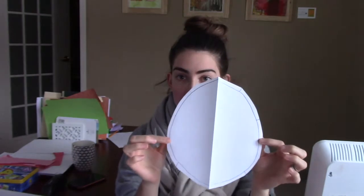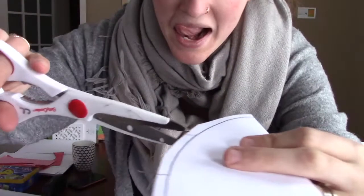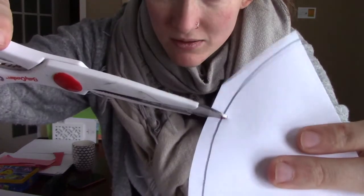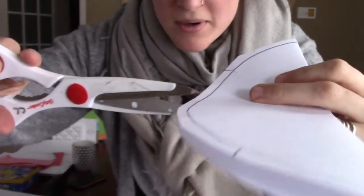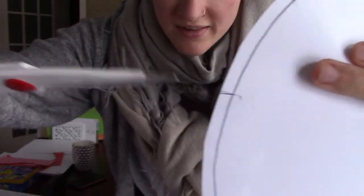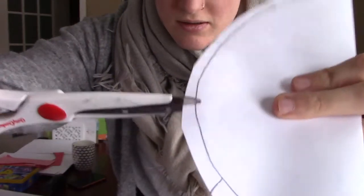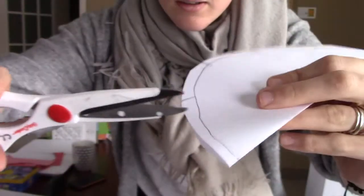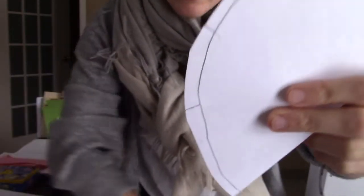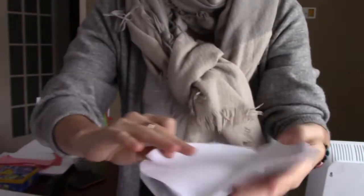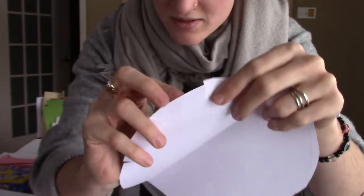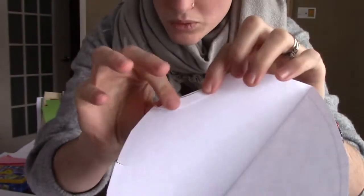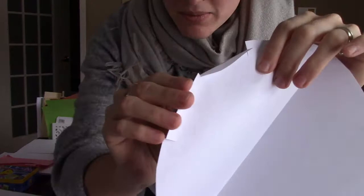All right, so we have the foundation of our mask here. And we are going to just cut on these marks right until that line. That's it. So right on the mark until that line. Right there, just like that. So now we have these tabs that we are going to just fold in on themselves. We're going to fold them all the same direction.